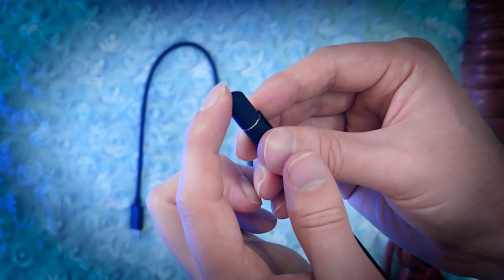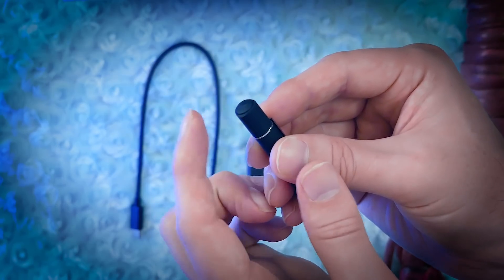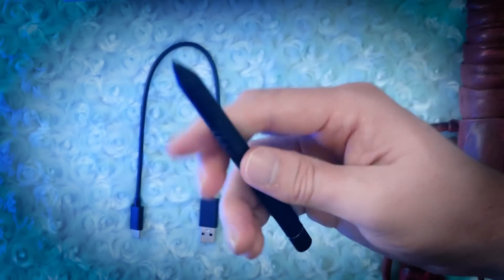There's a button on the eraser end you can use to pair this to your computer with Bluetooth and open Windows Ink apps. You can't use it as an eraser.